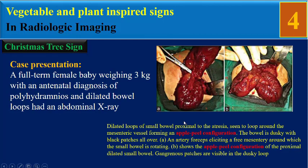These are the surgery images. Dilated loops of small bowel proximal to the atresia are seen looping around the mesenteric vessels, forming an apple peel configuration. The bowel is dusky with black patches all over, and an artery forceps is seen indicating a free mesentery around which the small bowel is rotating.